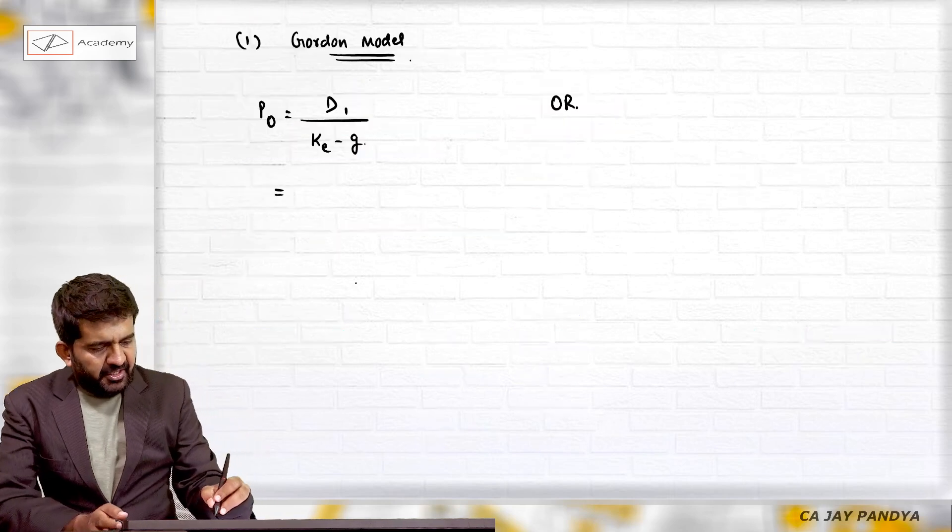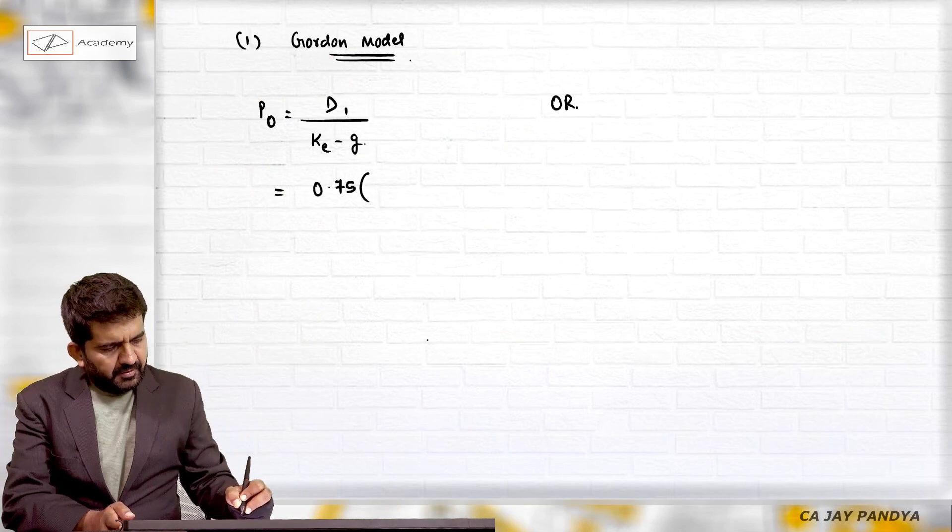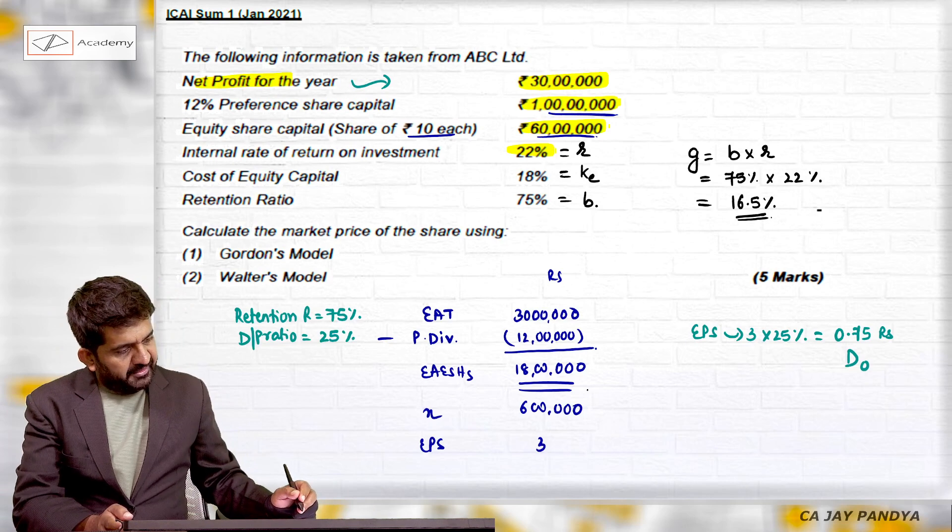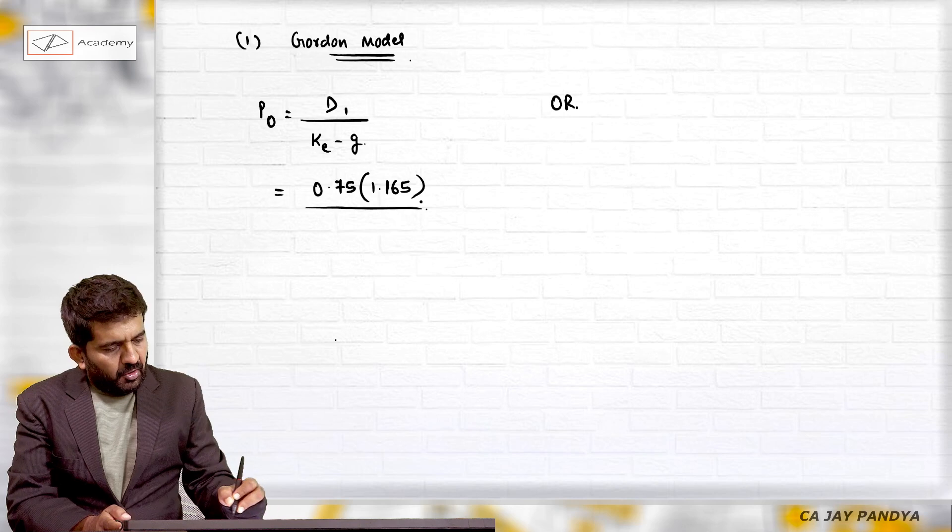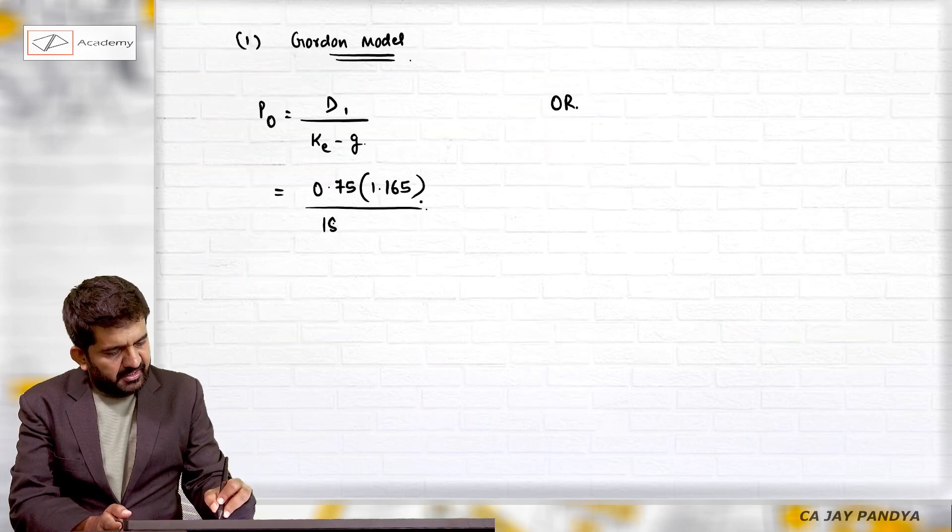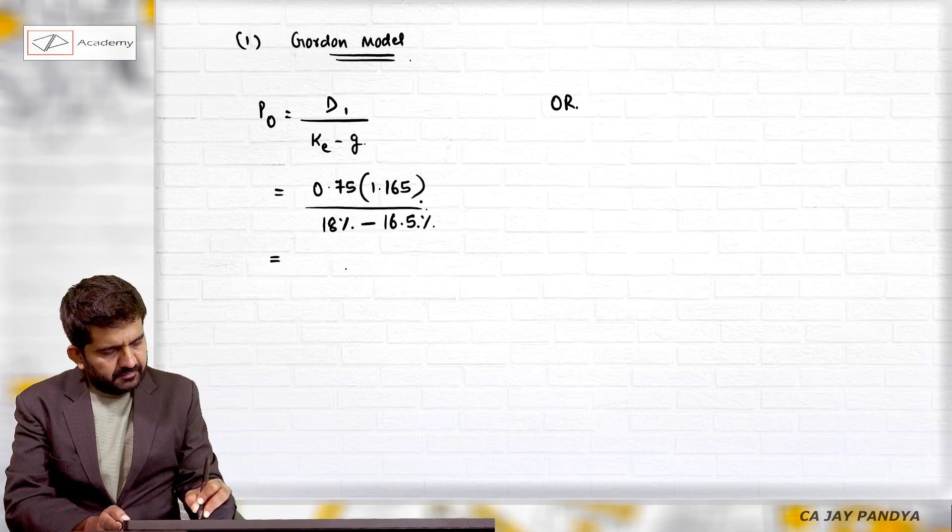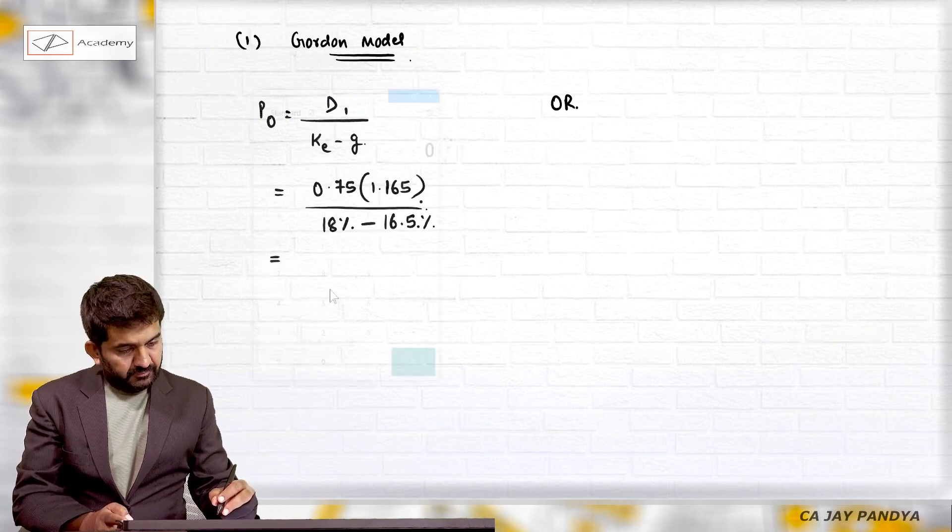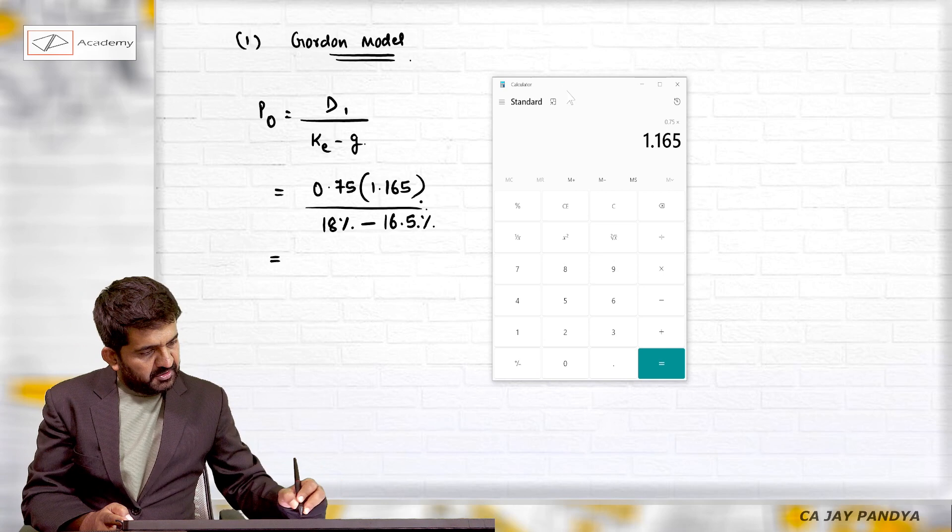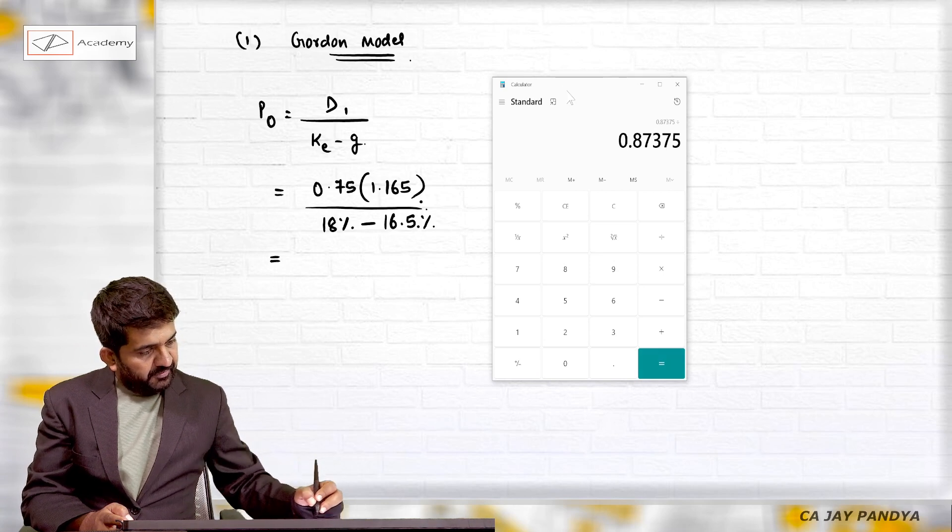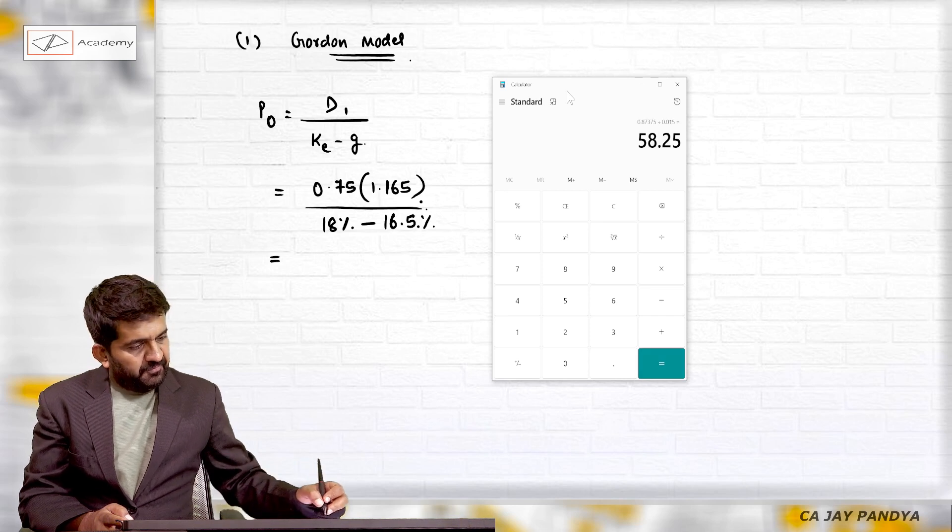So to find out D1, we will start with D0, which is 0.75, and plus growth rate, that is 1.165, upon Ke minus g. Ke is 18% and g is 16.5%. This is 0.75 into 1.165 divided by 1.5, which equals 58.20 rupees.